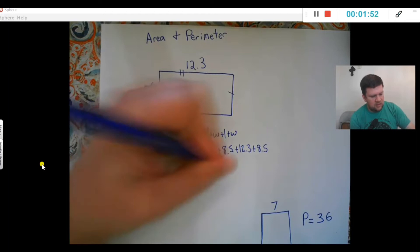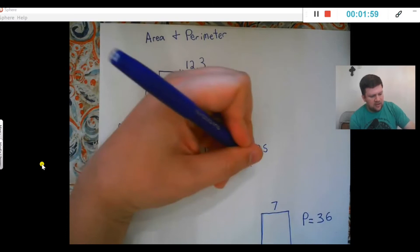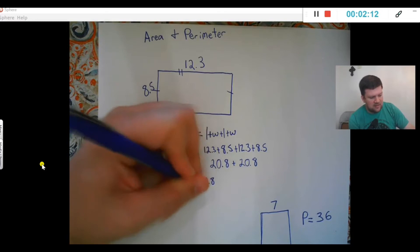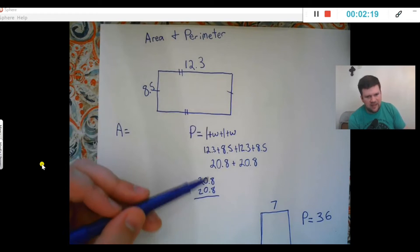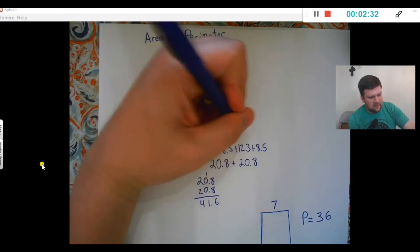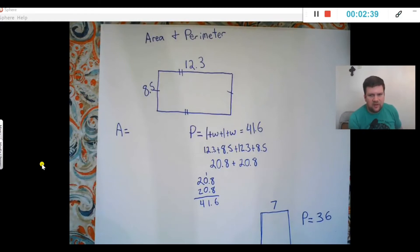Then you can stack and add however you want to add those up. Remember, eight tenths plus eight tenths—I'm adding just like adding dimes. Eight dimes plus eight dimes gives you a dollar and sixty cents, so that's six tenths, carry the one there, and I get 41.6. So my perimeter is going to equal 41.6.